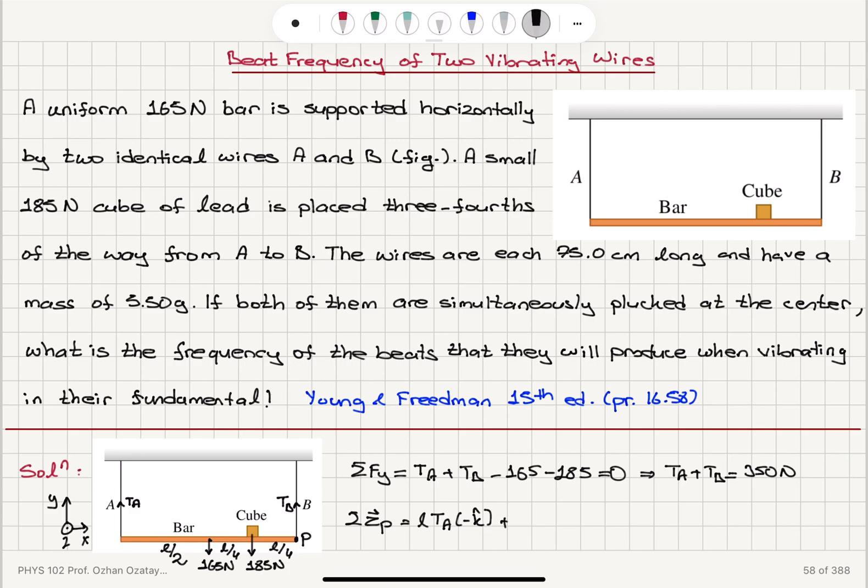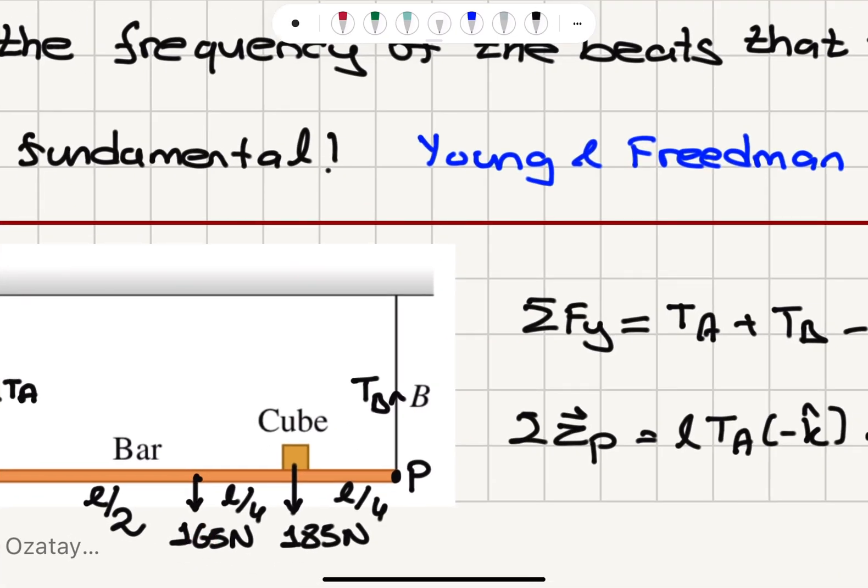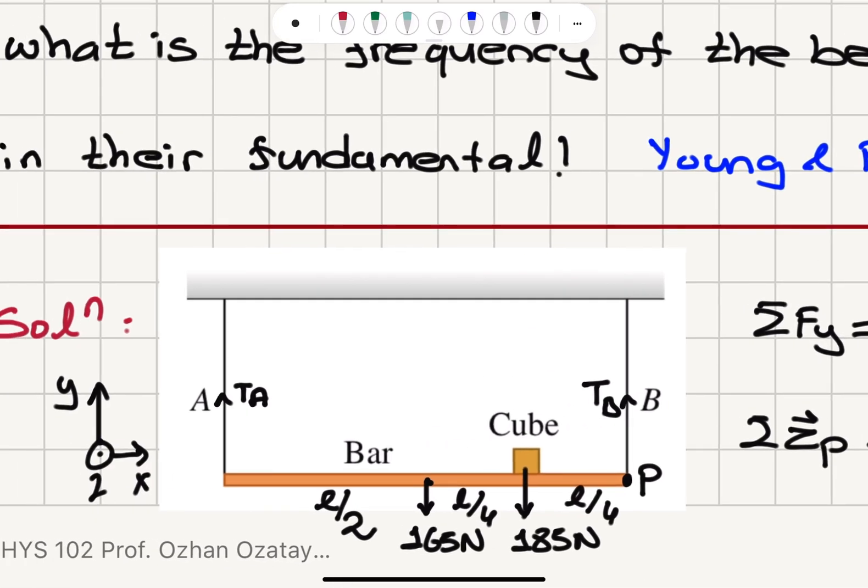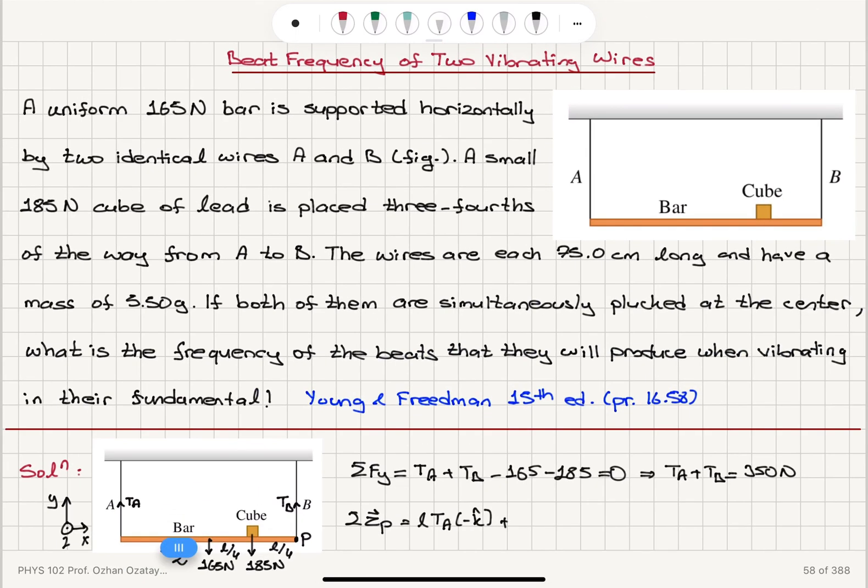Now, as for the torque due to these weights, we have a perpendicular distance L over 2 for 165 Newtons, L over 4 for 185 Newtons. And the vector from the pivot point to the application point cross with the weight, the gravitational force gives us a torque in plus k-hat direction.